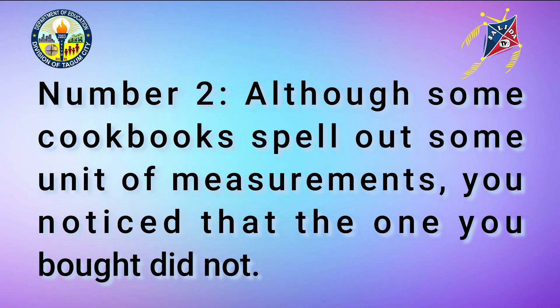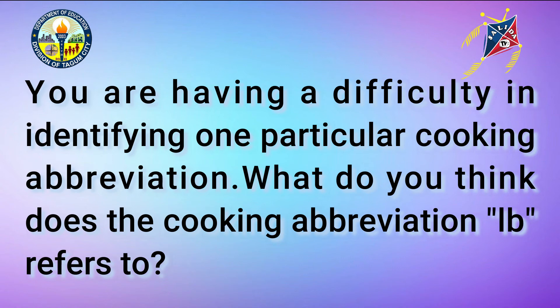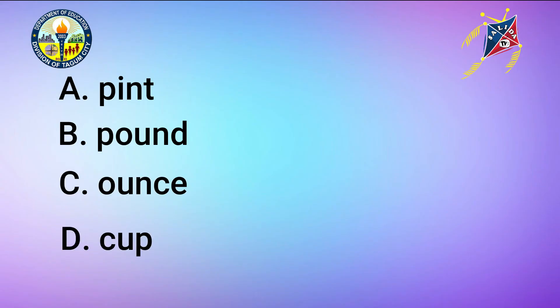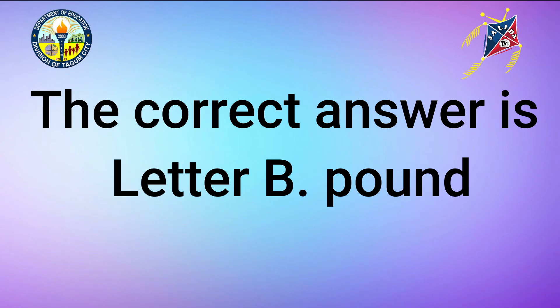Number 2: Although some cookbooks spell out some units of measurement, you notice that one you bought did not. You are having difficulty identifying one particular cooking abbreviation. What does the cooking abbreviation LB refer to? A. Pint, B. Pound, C. Ounce, or D. Cup. The correct answer is letter B, Pound.